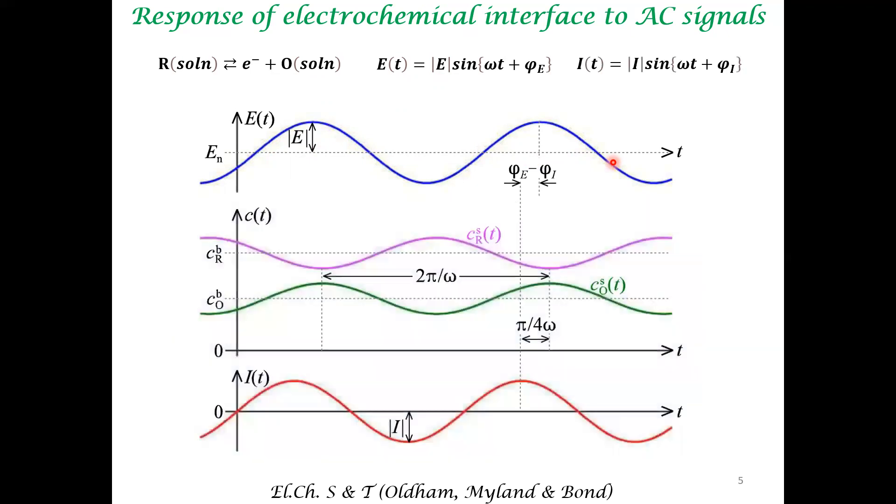Supposing you have a system at equilibrium and on top of that, you impose an AC small signal. In response to this variation, the system also shows a periodicity. The periodicity is at many levels. First, the concentration of R also varies in a periodic manner. Concentration of O varies in a periodic manner. And you get a current response which is also in a periodic manner.